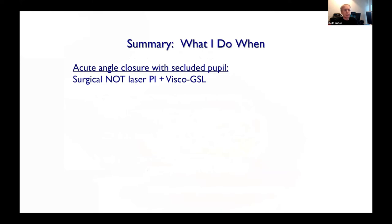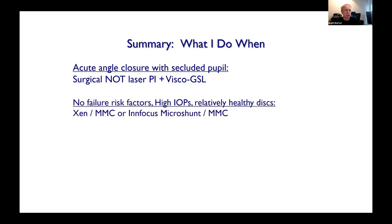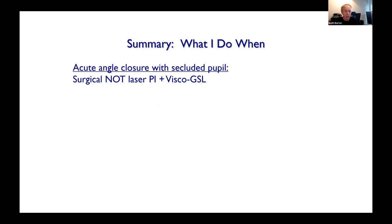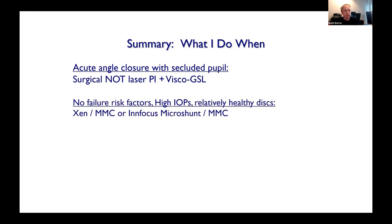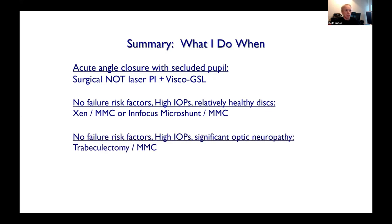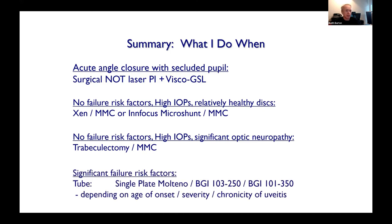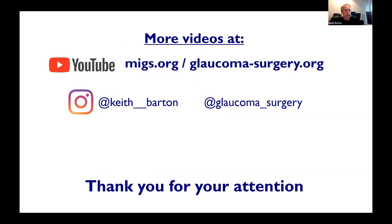Summary: For acute angle closure, take it really seriously — it's a surgical emergency. Do surgical, not laser PI, and the viscoelastic is important. You also need to treat these patients very aggressively with steroids — not just topical, but systemic steroids or orbital floor injections. No filtration failure, high IOP, mild optic nerve damage — subconjunctival MicroShunt. Severe optic nerve damage, high pressures — trab if no risk factors. Significant risk factors — tube, except for those at high risk of low pressures, in which case I use the single-plate Molteno.